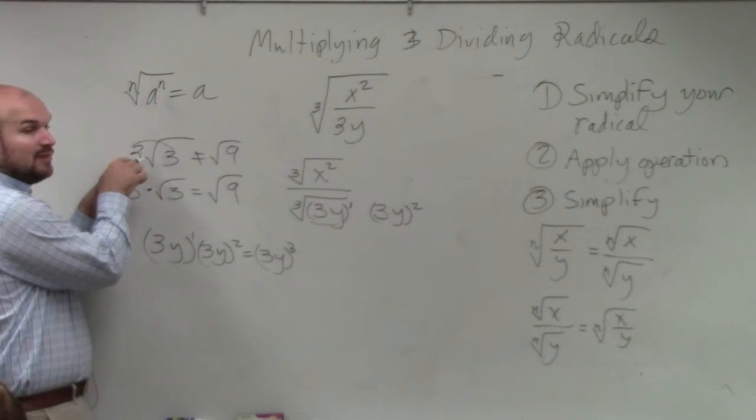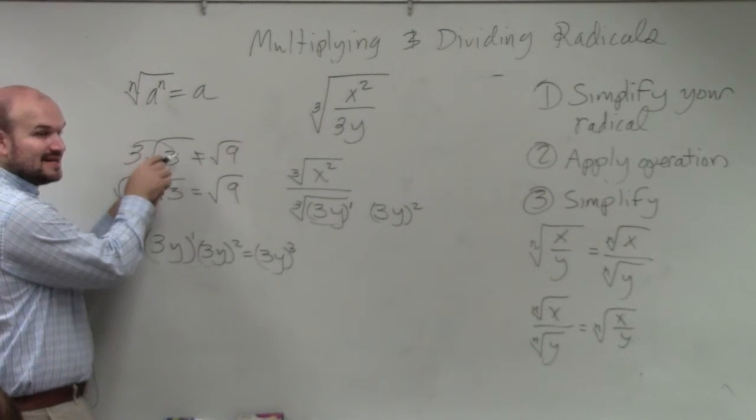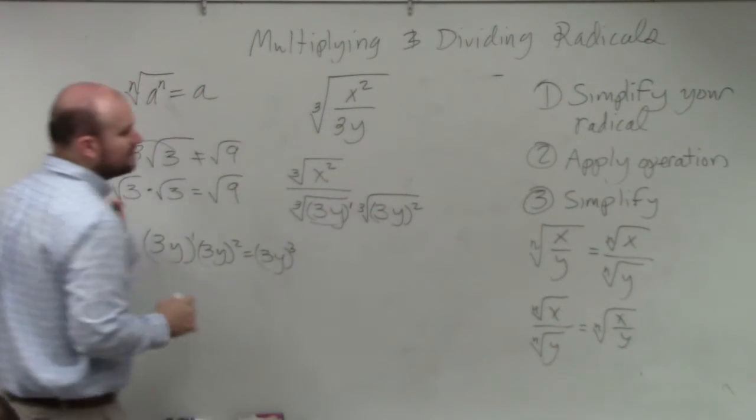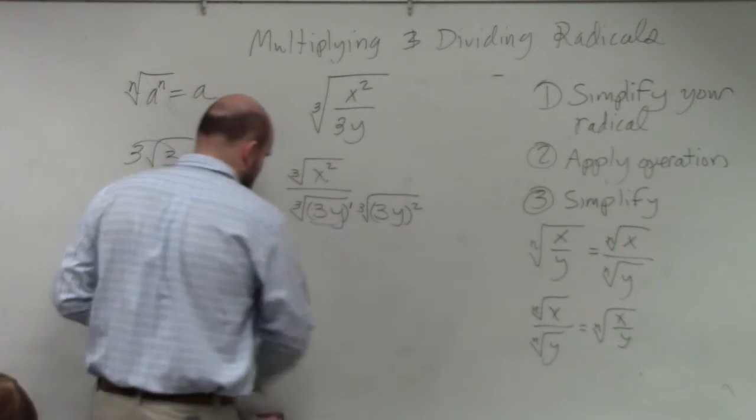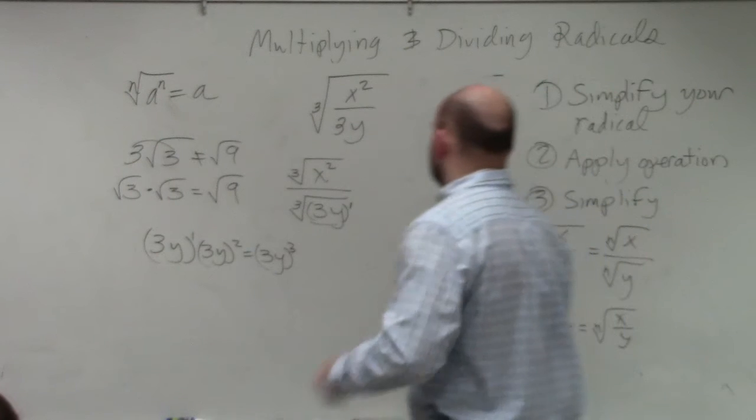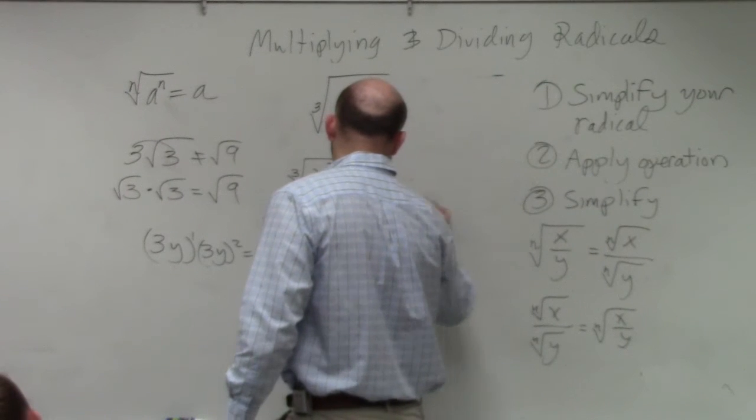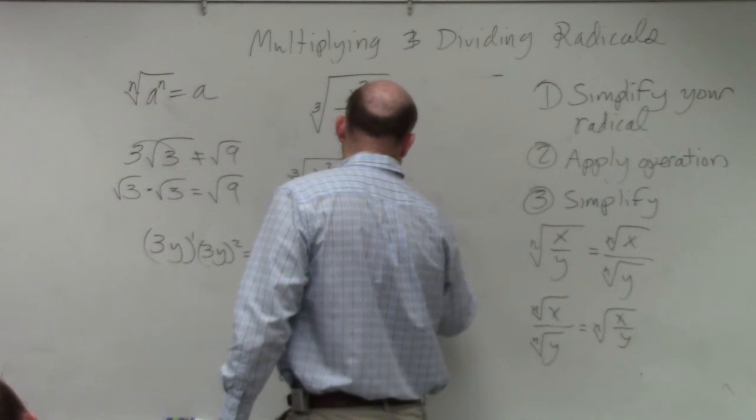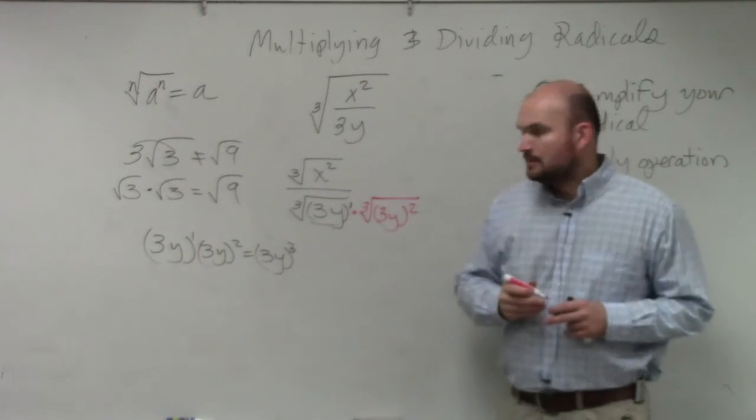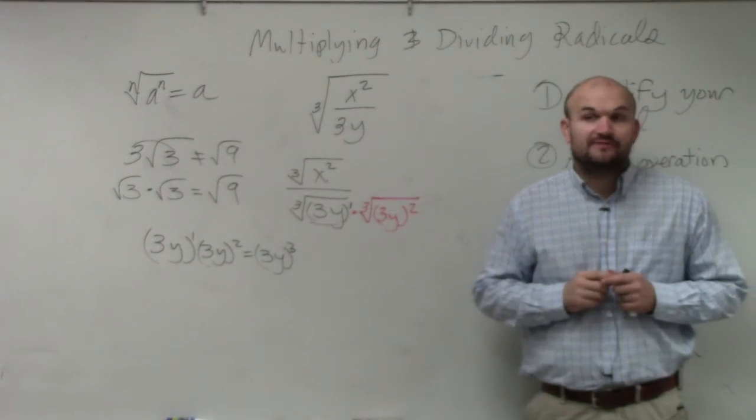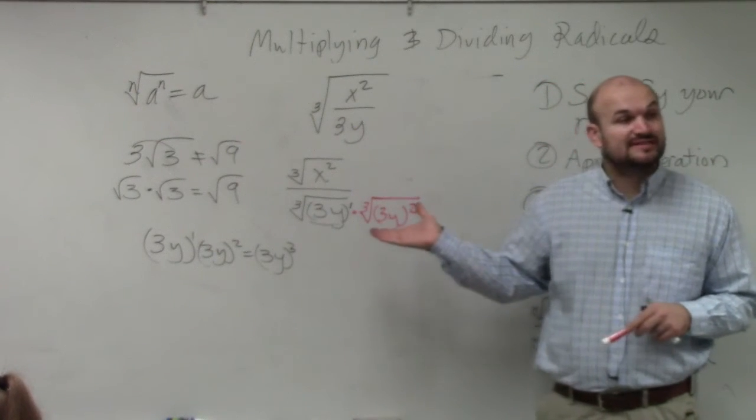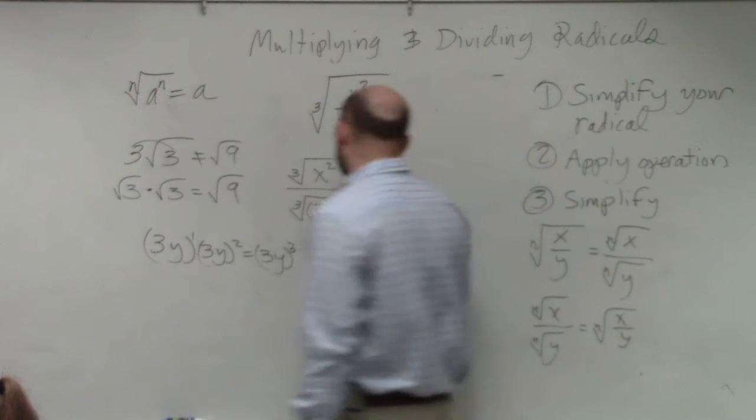However, remember I said you can't multiply something outside of a radical inside of a radical. So therefore, I need to write it like this. Then, if you guys remember, when rationalizing the denominator with complex numbers, whatever you do in the denominator, you have to do in the numerator.